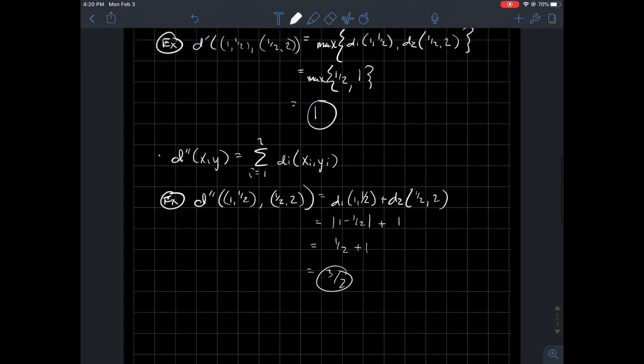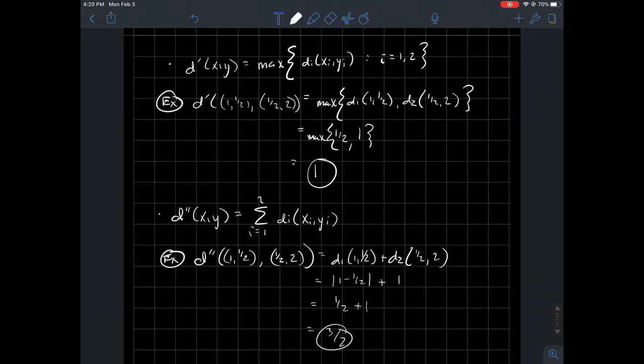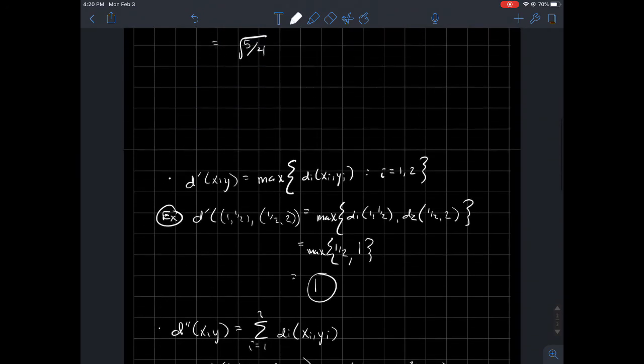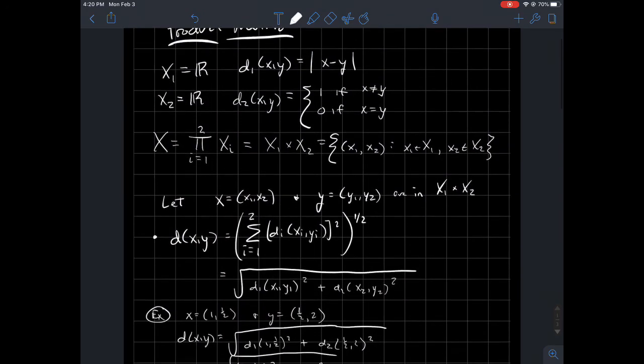So again, D, D prime, and D double prime are three different possible metrics that you could have on the product. There are plenty of other ones that you could put on a product space as well, but if you've got a product space and each component has its own metric, how can we make a metric on the product? And again, these are just three examples of how to do that.